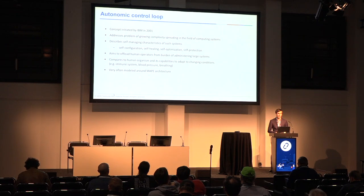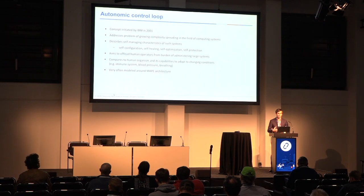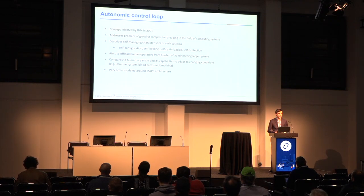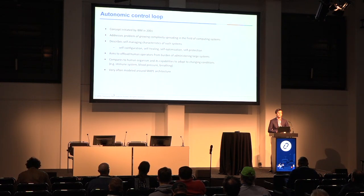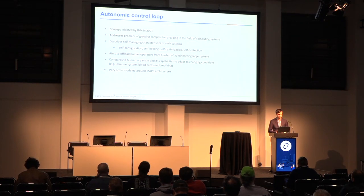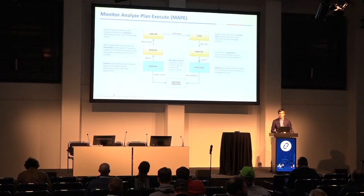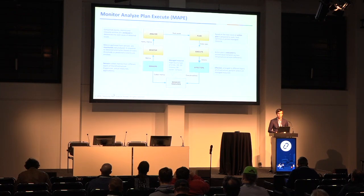IBM's 2001 white paper compared this autonomous concept to the human body — on a daily basis we don't have to think about how we breathe, our blood pressure, or our immune system; all of that happens automatically, so we can focus on more important tasks, like attending the OpenStack Summit. Autonomic control loops are modeled around an architecture called MAPE, which stands for Monitor, Analyze, Plan, Execute — four required phases to deliver autonomous behaviors.